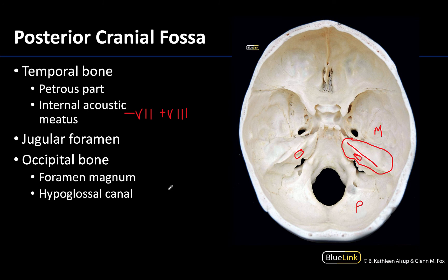Next let's move to the jugular foramen. The jugular foramen is located between the temporal bone and the occipital bone, and as you can see they are very irregularly shaped and don't look the same on either side. This is because the dural venous sinuses drain in this region — this is where the internal jugular vein begins — and veins have varying pressure, resulting in the variably shaped foramina. Additionally, cranial nerves 9, 10, and 11 — glossopharyngeal, vagus, and the accessory nerve — traverse the jugular foramen.